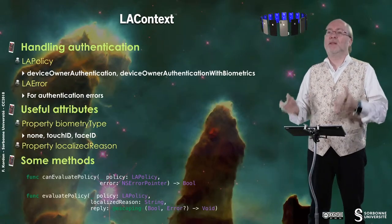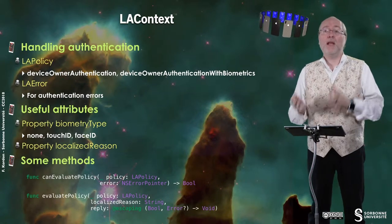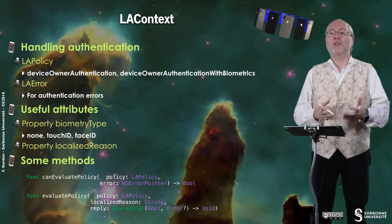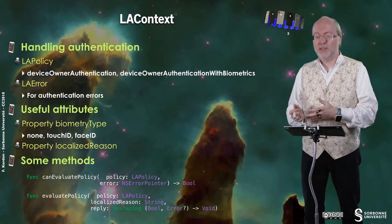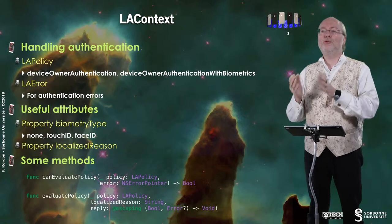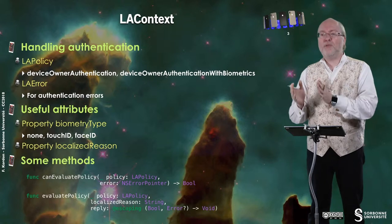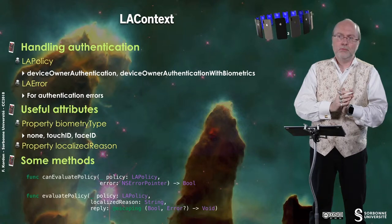You have a first class called LAContext — LA standing for Local Authentication — and you also have LAPolicy. Device owner authentication is one possible value of this type, and device owner authentication with biometrics is another. The difference is that the first allows using a code and, if available, biometric validation, while the second relies only on biometrics and does not work on devices without biometric sensors.